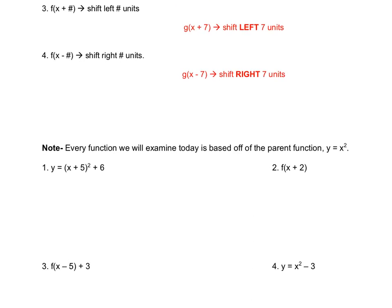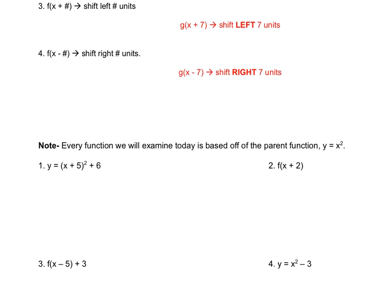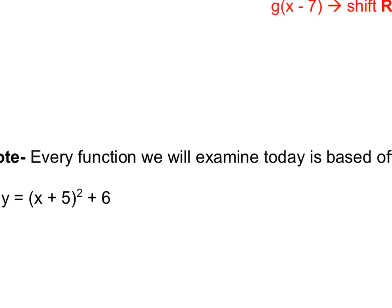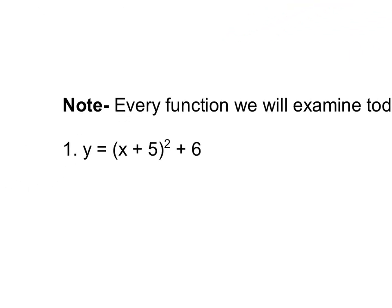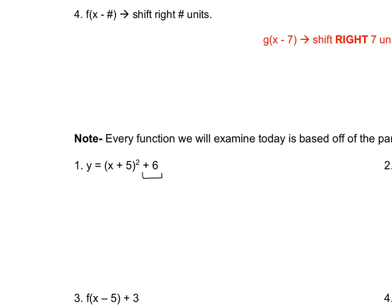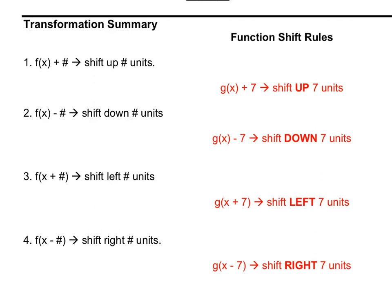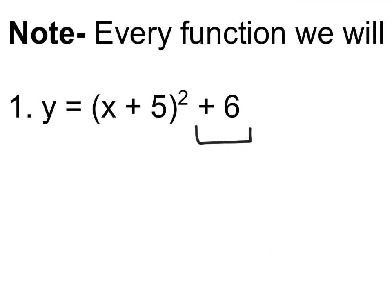So note every function we will examine today is based off the parent function y = x². So example number one, I have y = (x + 5)² + 6. The first thing I like to do is I like to basically go backwards. I like to look at the things on the outside of my parentheses. So that's telling me if I'm going up or if I'm going down. So if it's plus a number, it's a shift up. So this is a shift up six units.